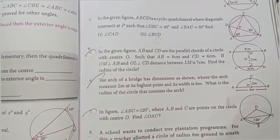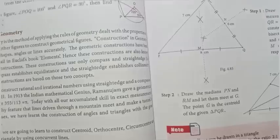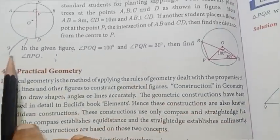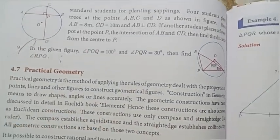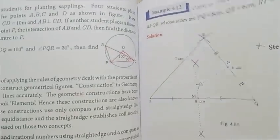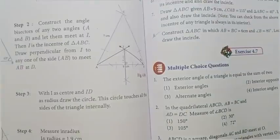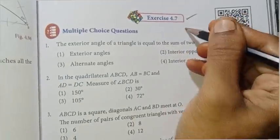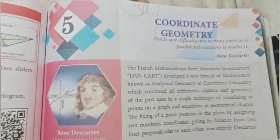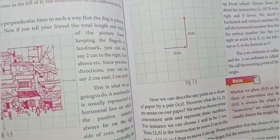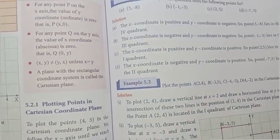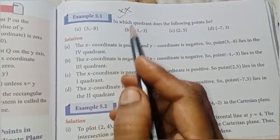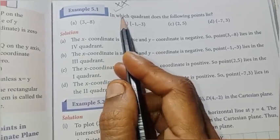Chapter 4 has maximum questions, so practice those. Page number 174, 9th question is also there. Practical geometry — practice Exercise 1 for 1 mark questions. Then Chapter 5, Coordinate Geometry — page number 191, Example 5.1 is repeated and is an 8-mark question worth 2 marks. Work this one out well.